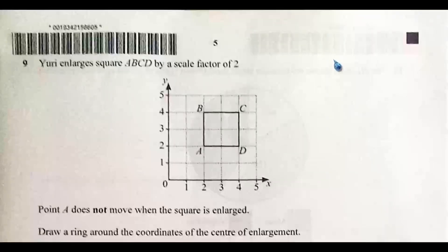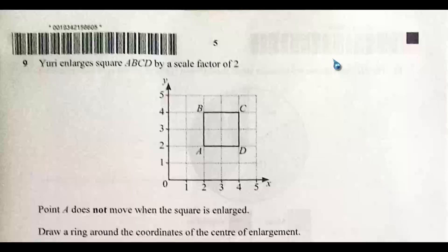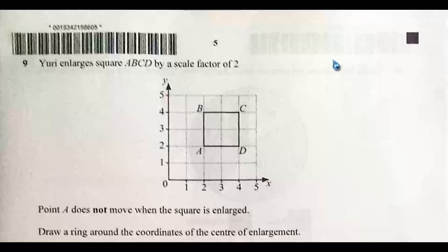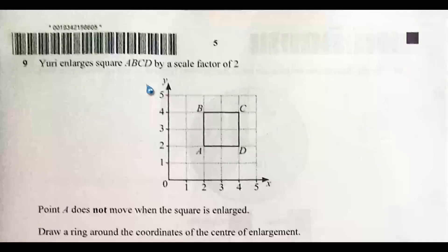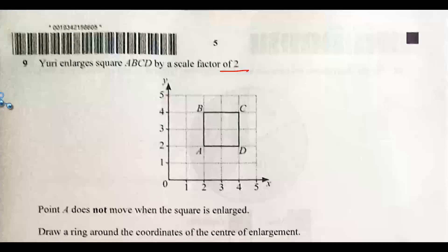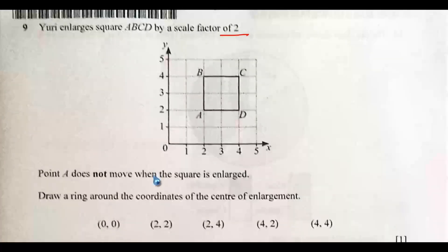Hello everyone, welcome back to part two of paper two of lower secondary checkpoint mathematics written in April 2024. Question nine: Yusuf enlarges square ABCD by a scale factor of two, then point A does not move when the square is enlarged. This is a fixed point.